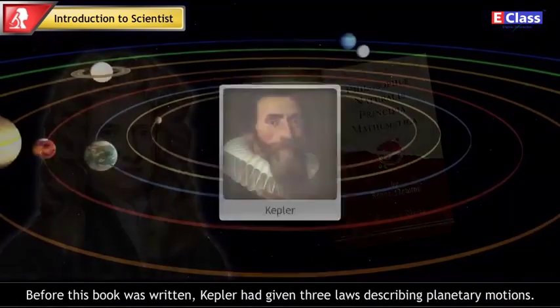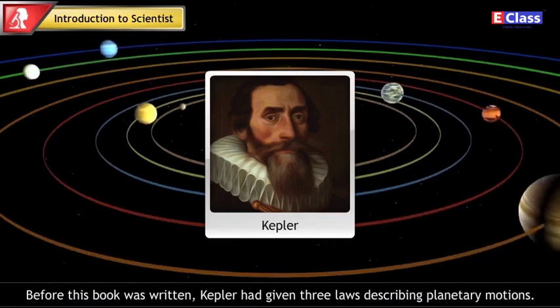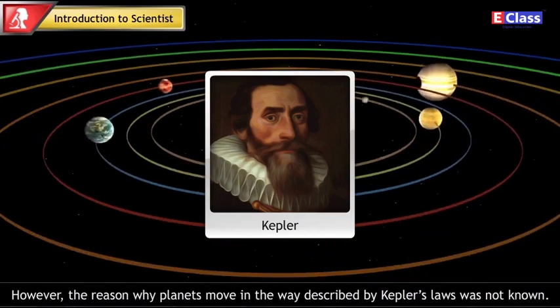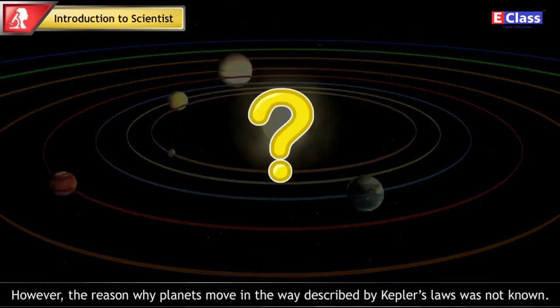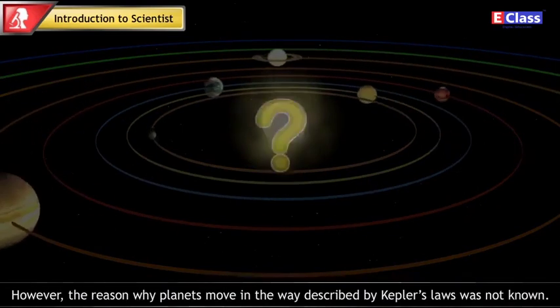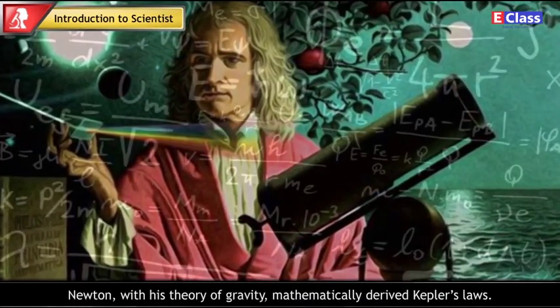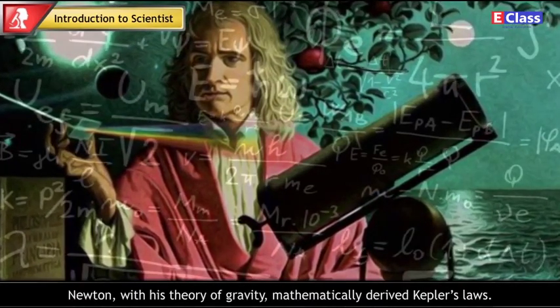Before this book was written, Kepler had given three laws describing planetary motions. The reason why planets move in the way described by Kepler's laws was not known. Newton, with his theory of gravity, mathematically derived Kepler's laws.